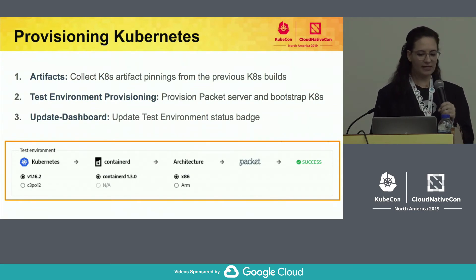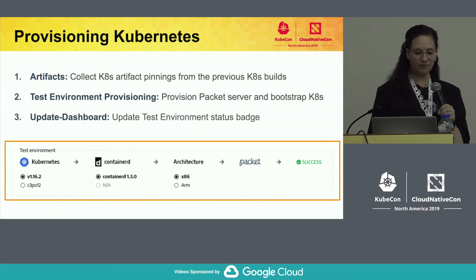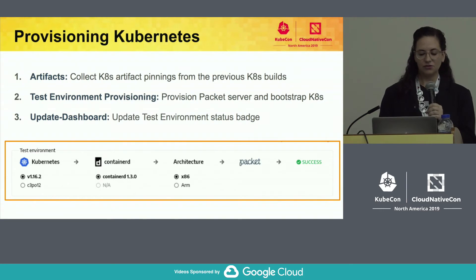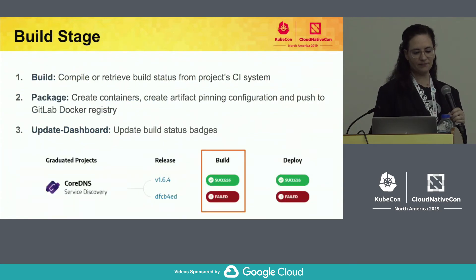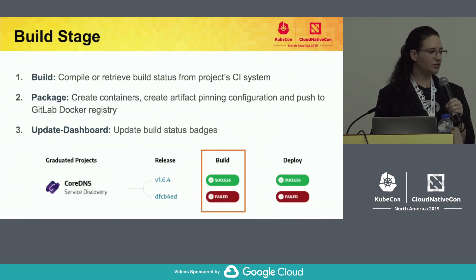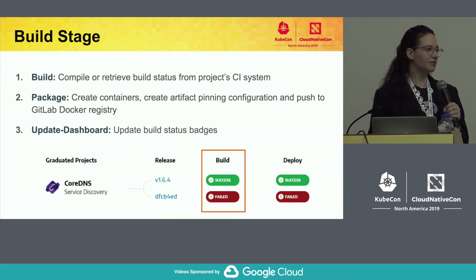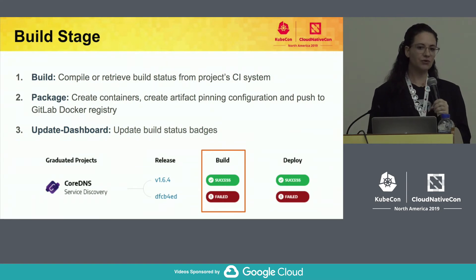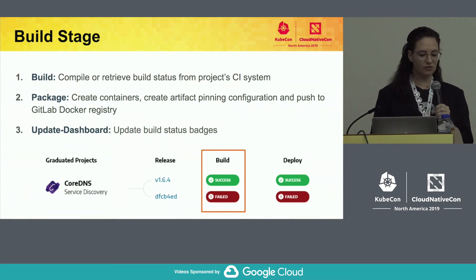In the provisioning stage, we provision test environments. Packet x86 and ARM servers are provisioned using Terraform. The Kubernetes stable and head builds run, and then KubeSpray provisions the clusters onto the packet servers, and then the dashboard shows the results. For the build stage, the CI testing system can integrate with external CI systems like Travis CI, as well as generate its own build artifacts internally, which is what we're currently doing for the ARM architecture. The CI testing system creates or retrieves build status and then displays the results under the build column.